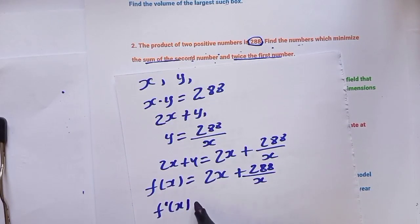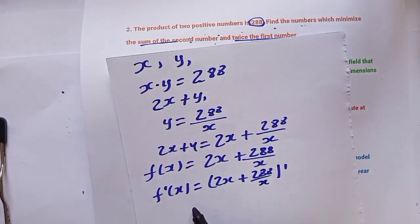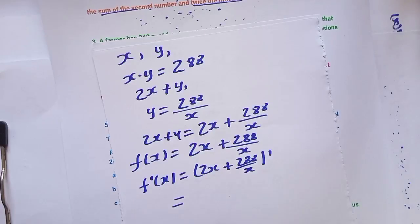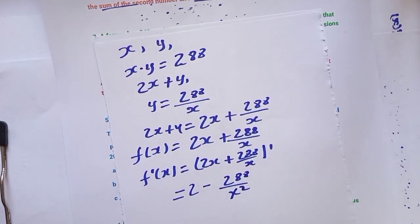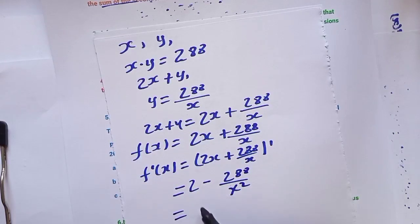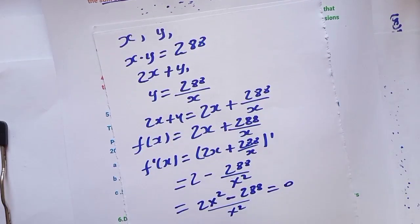Substituting y into the expression gives f(x) = 2x plus 288/x. To minimize, differentiate f(x). For 2x use the power rule, and for 288/x use the quotient rule. Setting f'(x) equal to zero: 2 minus 288/x² equals 0.